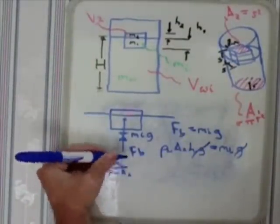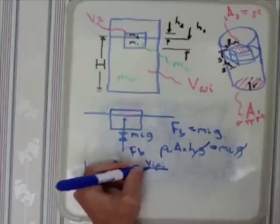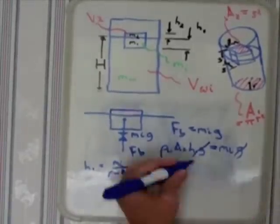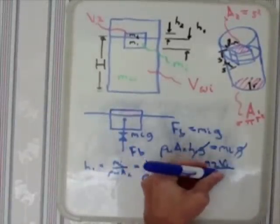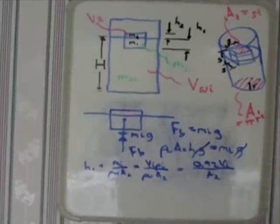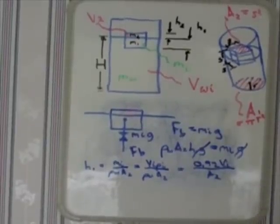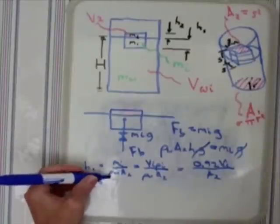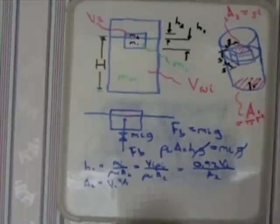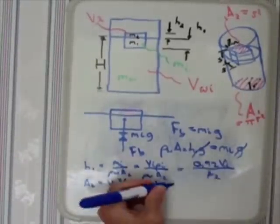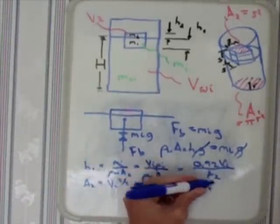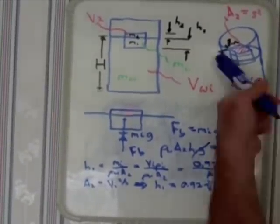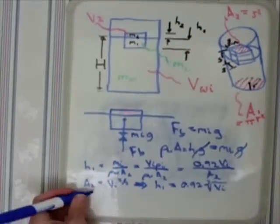Rewriting FB we get density of water A2 H1G equals MIG. The G's cancel out and we can get H1 and break that down into very simplistic terms. It winds up being 0.92 VI over A2 and we can actually get that in even more simple terms because A2 is equal to VI to the two-thirds power. So rewriting all that we get 0.92 times the cube root of VI as our H1 term.